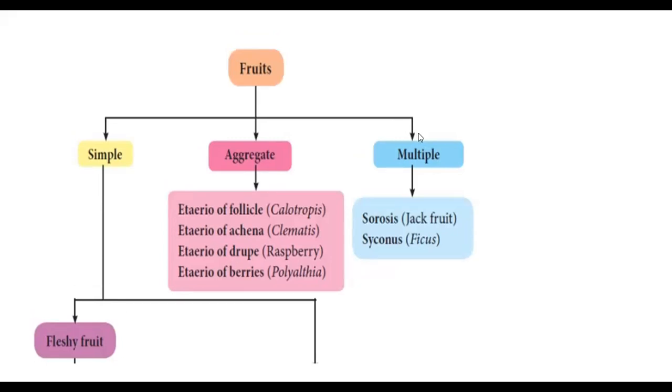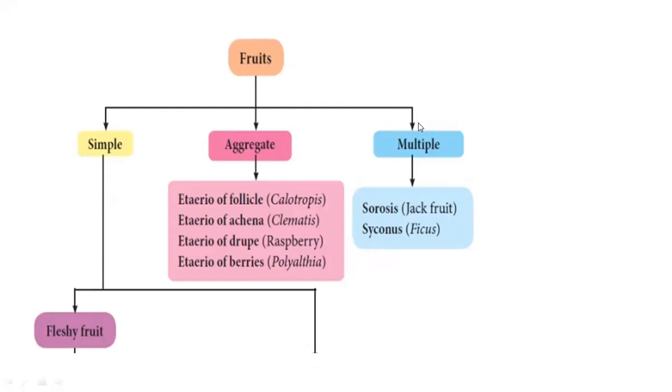Etaerio is aggregate fruit. And next, multiple fruits is jackfruit, sorosis and syconus is ficus fruit. Now, Calotropis is an etaerio of follicle. Etaerio of achene is Clematis. Etaerio of drupe is raspberry. Etaerio of berries is Polyalthea.